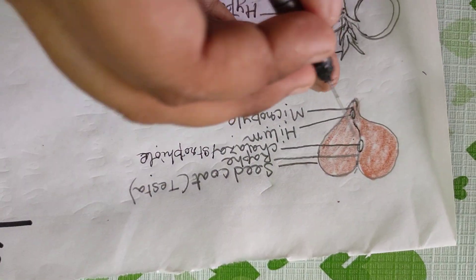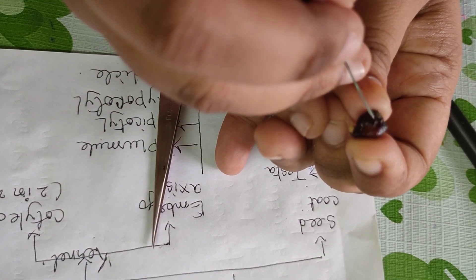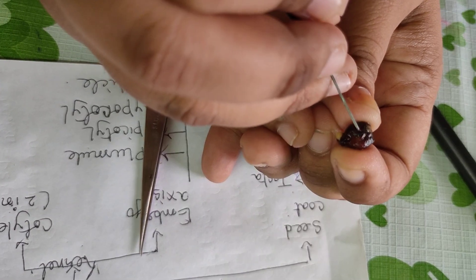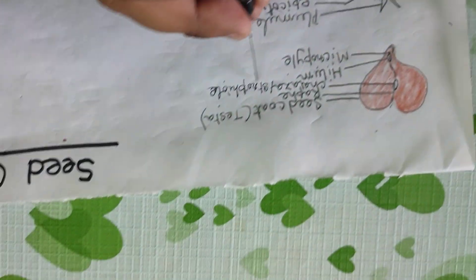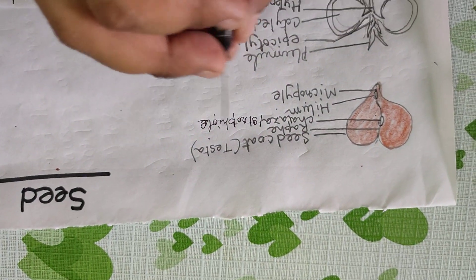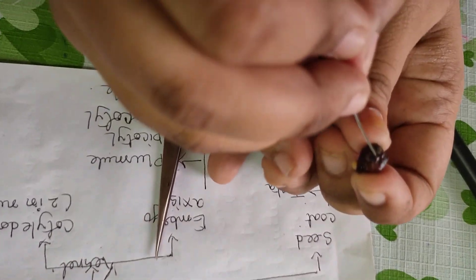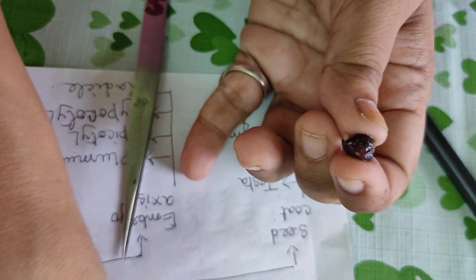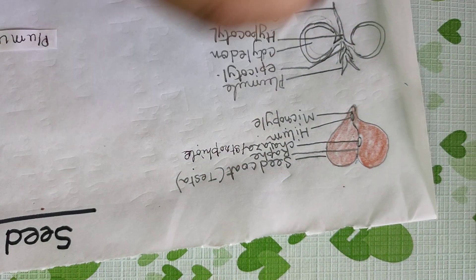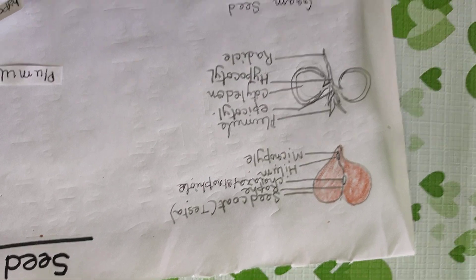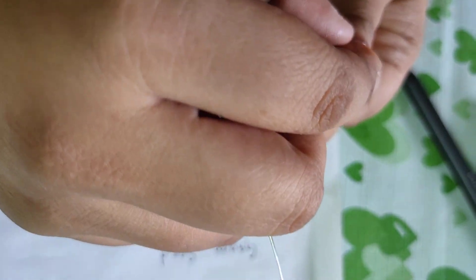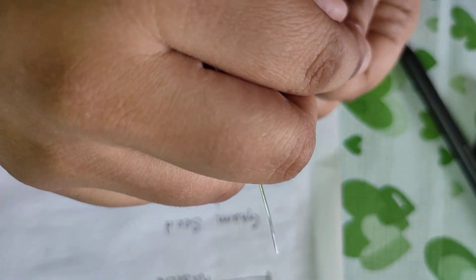Below the hilum, there is a small pore that is known as micropyle. There is also another scar mark present here, which is known as strophiole, and the lining that is known as raphe. This is all about the outer portion of the gram seed.